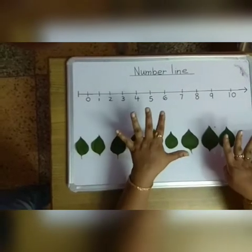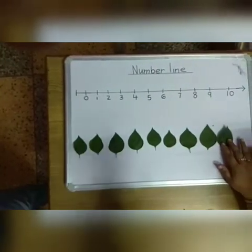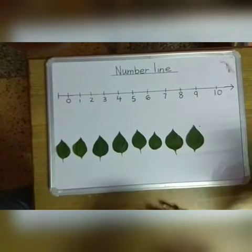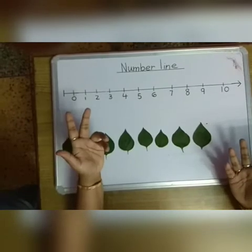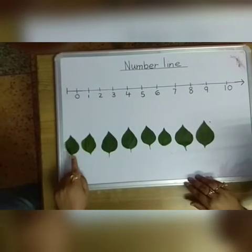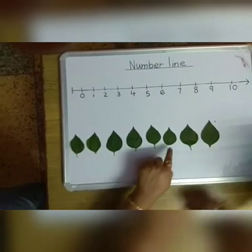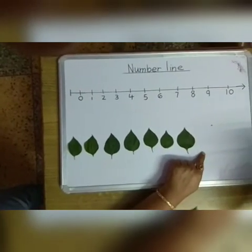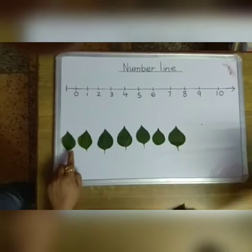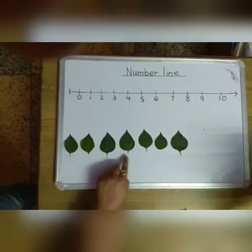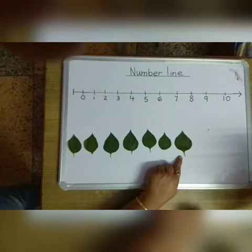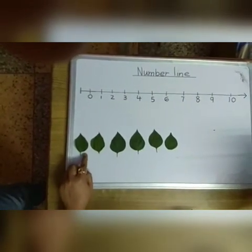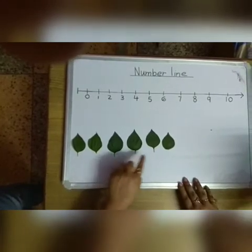Let's count. Now how many leaves? 1, 2, 3, 4, 5, 6, 7, 8. Now we will remove one more leaf. Let's count once again: 1, 2, 3, 4, 5, 6, 7. Let's remove one more leaf. Let's count once again: 1, 2, 3, 4, 5, 6.